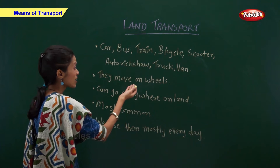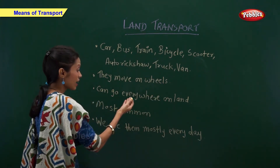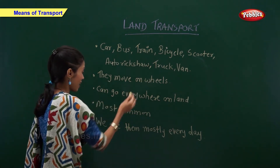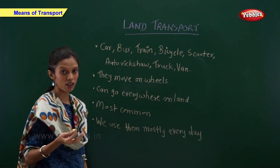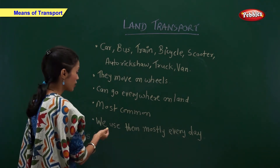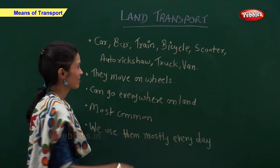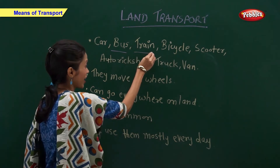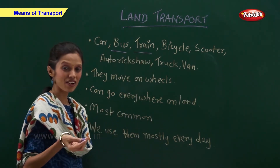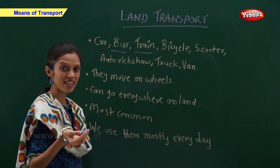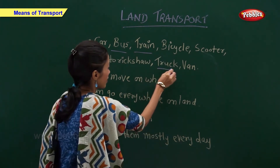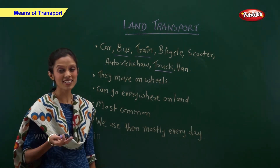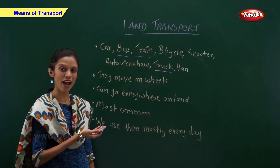These vehicles move on the wheels. They can go everywhere on the land. These vehicles are the most common method of land transport and we use these vehicles every day. Bus stops at a bus stop. Train runs on a railway track and it stops at a railway station. Truck is mainly used for goods transport. Now let us take a look at some of the examples of land transport.